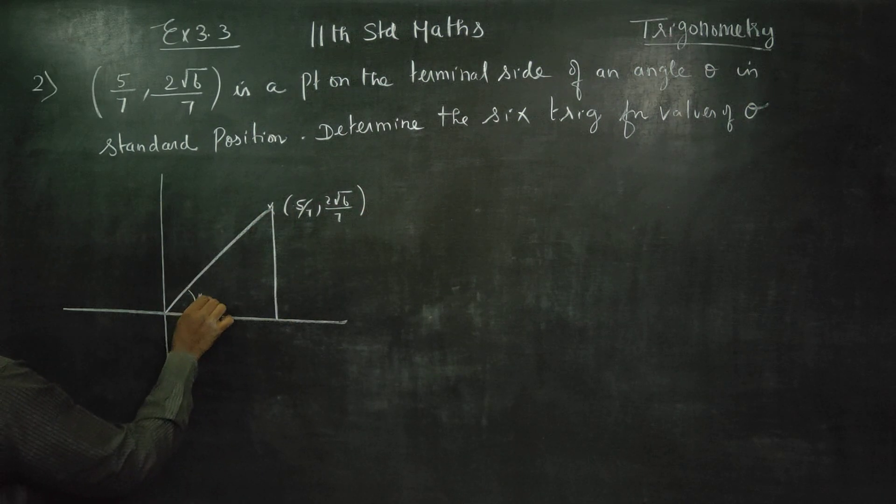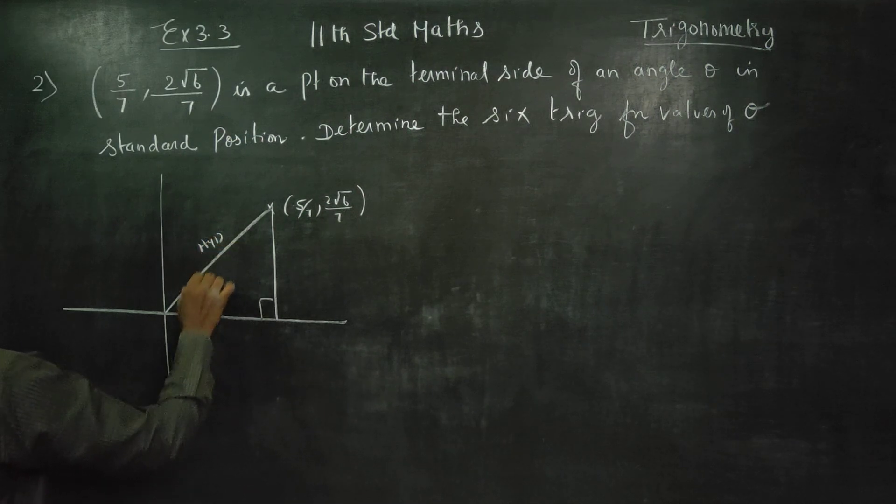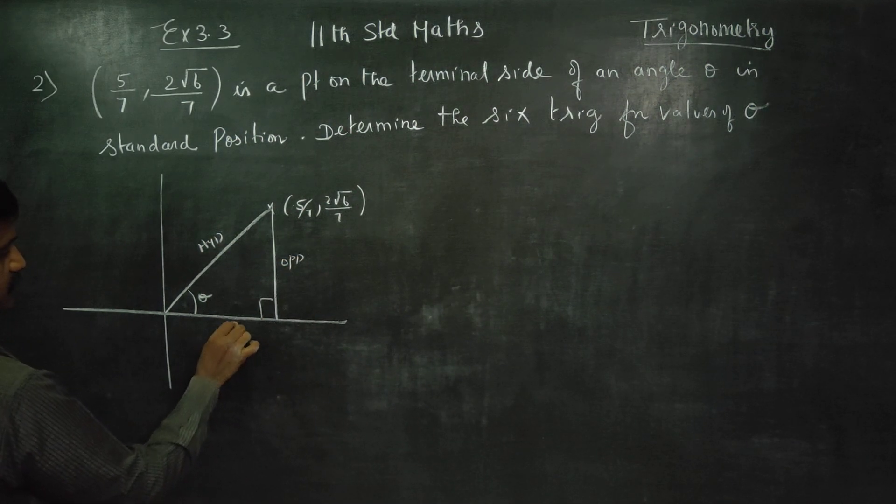This is a right angle triangle with angle theta and 90 degrees. Therefore, this is my hypotenuse, this is my opposite side, and this is my adjacent side.